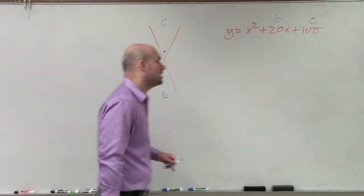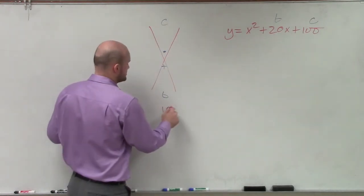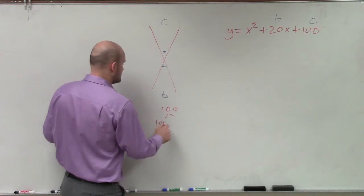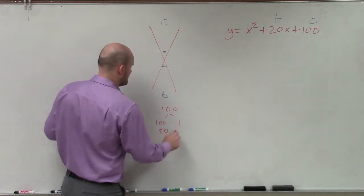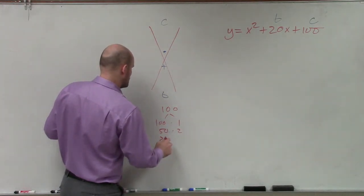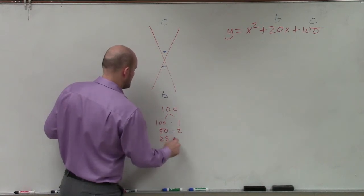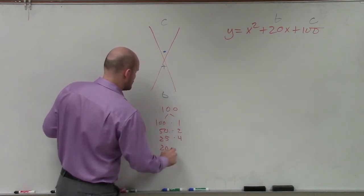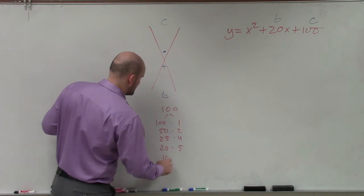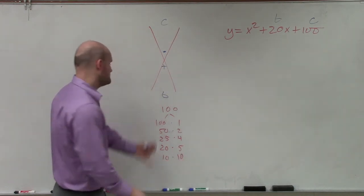So to do that, we need to take the factors of c, which is 100. So I can break that into 100 times 1, 50 times 2, 25 times 4, 20 times 5, and then 10 times 10.